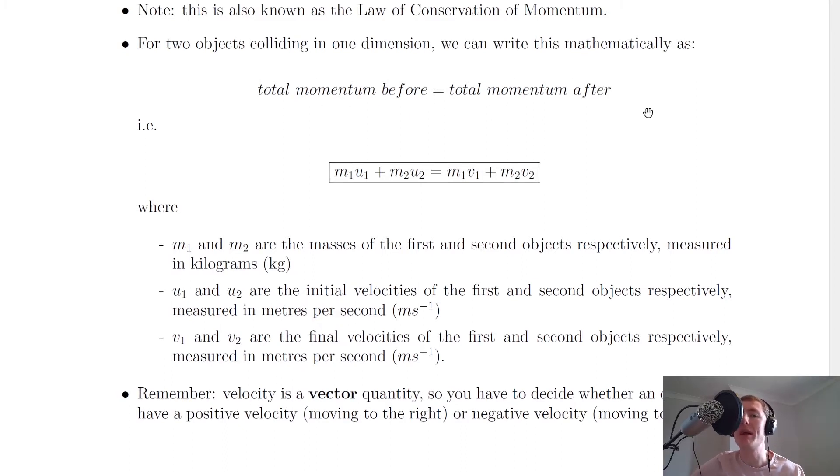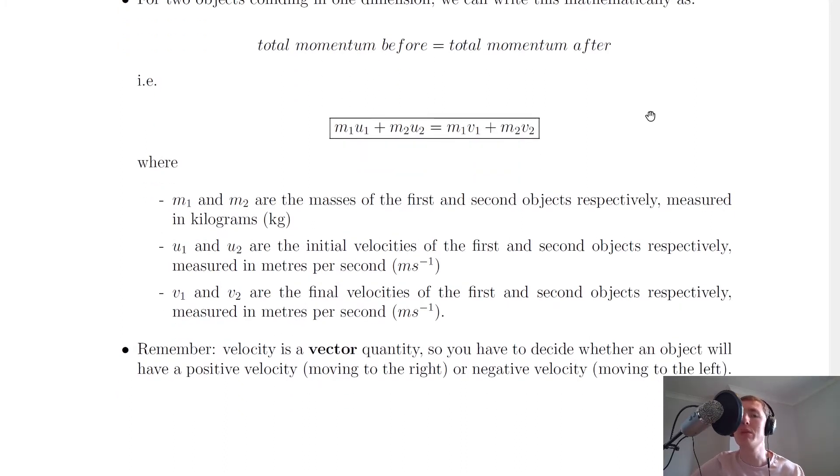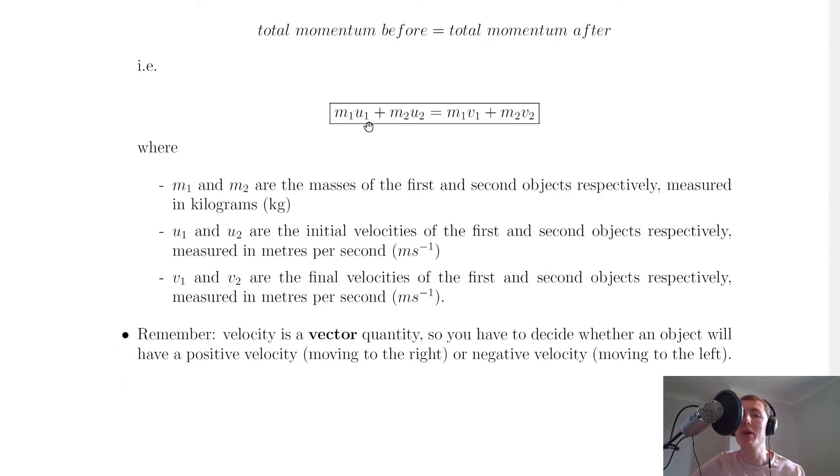Or in symbol terms, we can say that m₁u₁ + m₂u₂ = m₁v₁ + m₂v₂. This looks quite complicated, but we'll just break it down into what the parts mean.